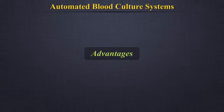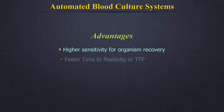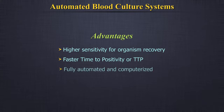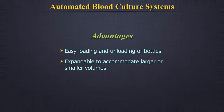Advantages of a continuous monitoring automated blood culture system over manual blood culture methods: higher sensitivity for organism recovery; faster time to positivity (TTP), that is, the time from incubation till the detection of the first positive signal; fully automated and computerized; easy loading and unloading of bottles; and expandable to accommodate larger or smaller volumes.